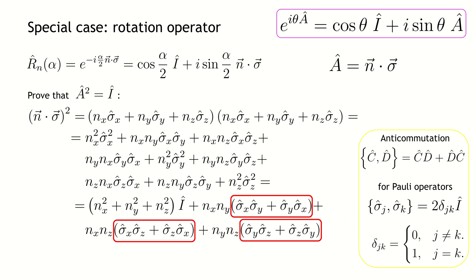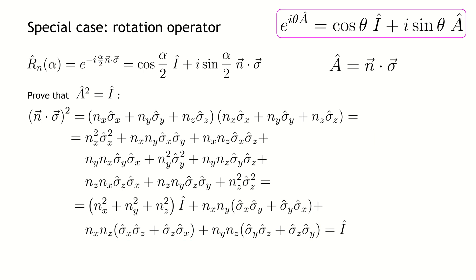Thus, the terms in red frames vanish. Taking into account that N is a unit vector, we are left with the identity operator. We have proved that sigma N is a self-inverse operator.